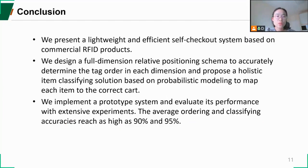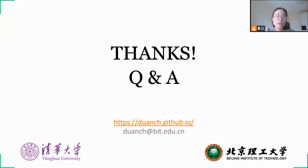Now in summary, we present a lightweight and efficient self-checkout system based on commercial RFID products. We design a full-dimension relative positioning schema and propose an item-classifying solution based on probabilistic modeling. We implement a prototype system and evaluation results show that the final classifying accuracy can reach as high as 95%. That's all of my talk. For more details, please refer to our paper. Thanks for your attention.